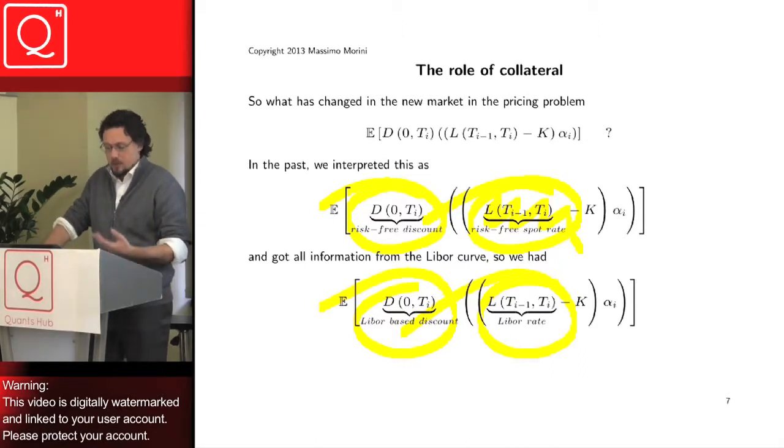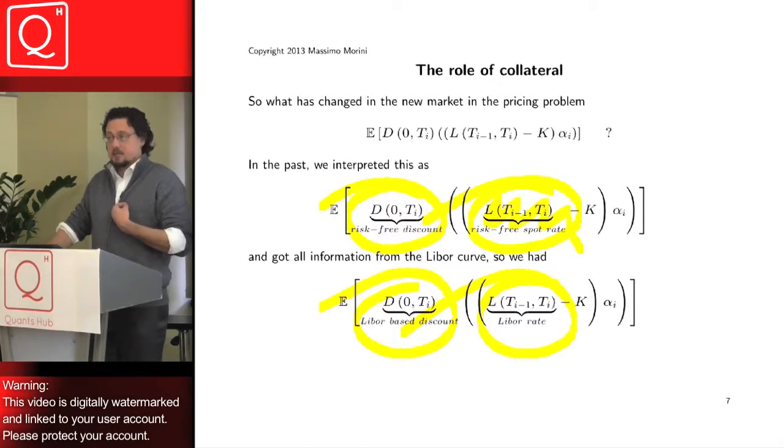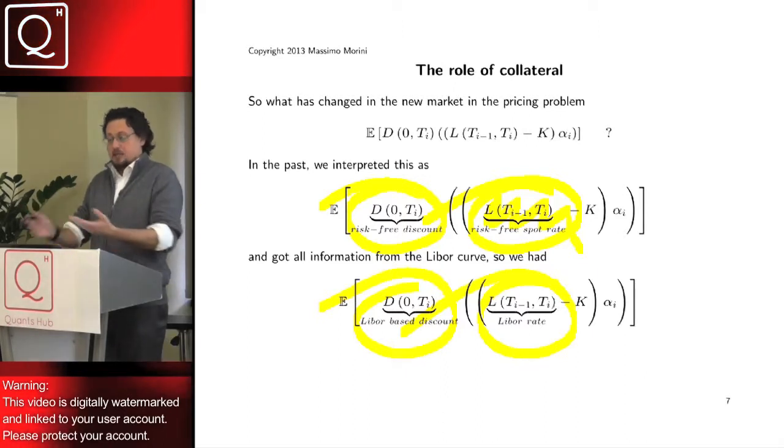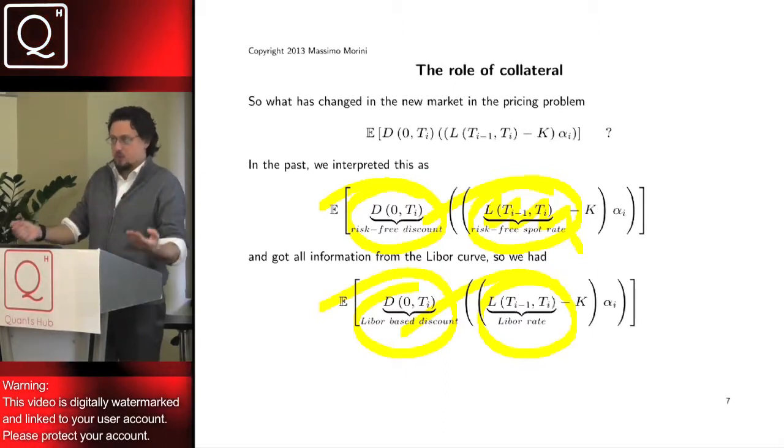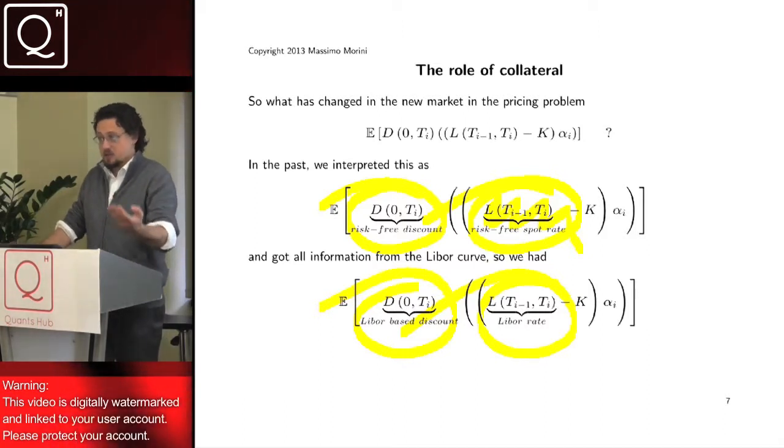But from the modeler, the truth is that what has changed is the underlying from a risk-free rate to a risky rate. And in this way is no more consistent with discounting. That discounting has remained risk-free.